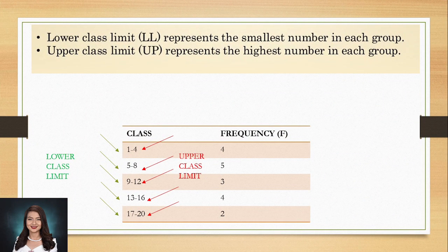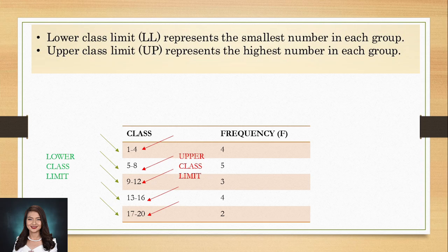The lower class limit or LL represents the smallest number in each group. While the upper class limit or UL represents the highest number in each group. For example, in the group 1 to 4, 1 is our smallest number and that would be our lower class limit. And 4 is our highest number in that group, so 4 is our upper class limit.